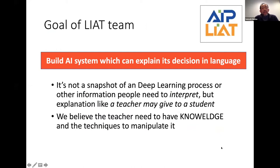Our goal is to build an AI system which can explain its decisions in language. Nowadays deep learning is very popular, but it just gives answers without explanation. There is research to give some kind of interpretation, but I think it's interpretation — people need to interpret, not just be told. Explanation is something like a teacher may give to a student in language. We believe the teacher needs to have knowledge, technology, and technique to manipulate it in order to create the explanation.